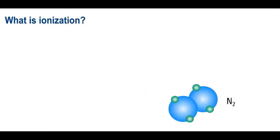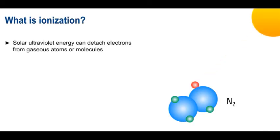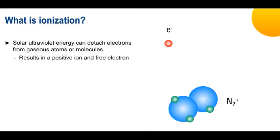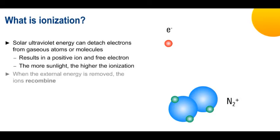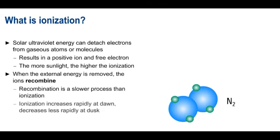In order to understand skywave propagation, we should start by explaining how ionization occurs in the Earth's atmosphere. When ultraviolet energy or radiation from the Sun strikes gas atoms or molecules in the atmosphere, this energy can cause electrons to become detached. The result is a positive ion and, more importantly, a free electron. The Earth's magnetic field keeps these free electrons roughly in place. The level of ionization and the number of free electrons increases as the amount of sunlight striking a given part of the atmosphere increases. When that part of the atmosphere rotates away from the Sun, that is, at night, this energy is removed, and the ions recombine to form electrically neutral atoms and molecules. Note that recombination is a slower process than ionization. Atmospheric ionization increases rapidly at dawn, but decreases less rapidly after dusk.